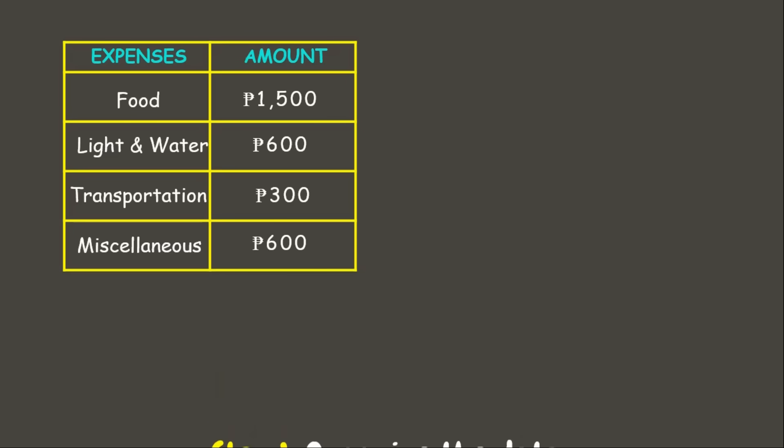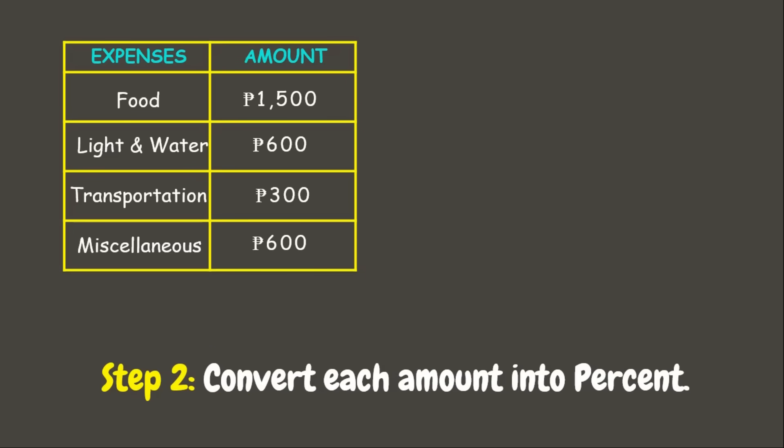For our next step, we need to convert each amount into percent to determine what part of the whole each item represents. But first, we need to get the total amount spent for the expenses. Adding them all up, we have 3,000 pesos.